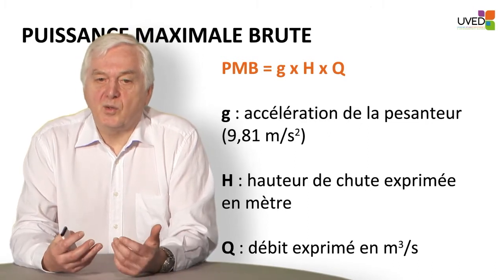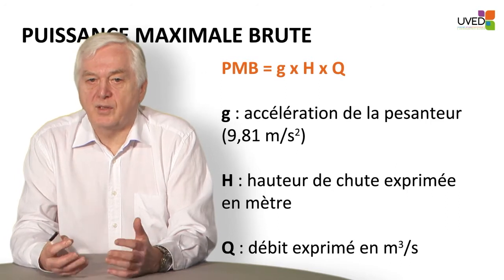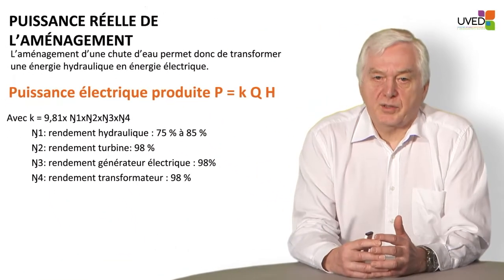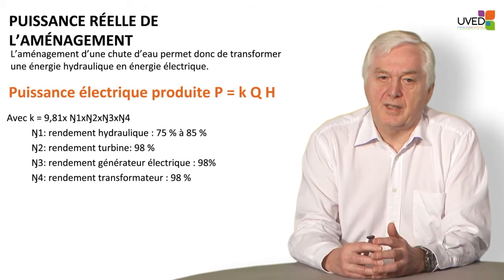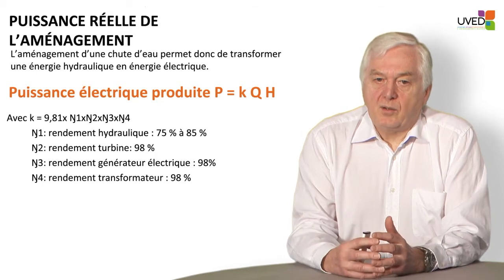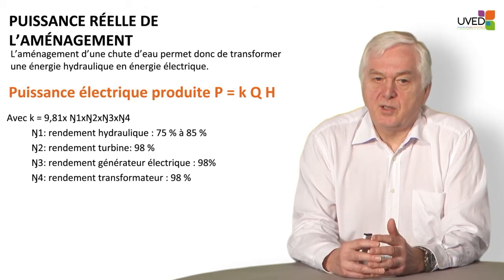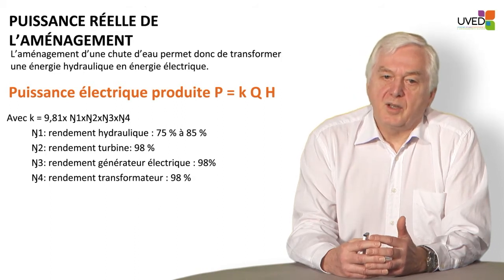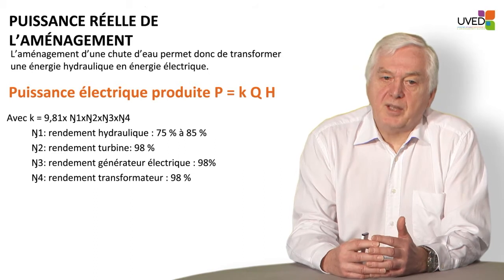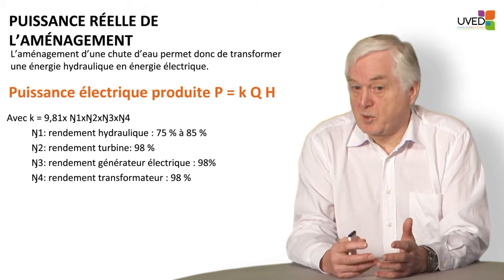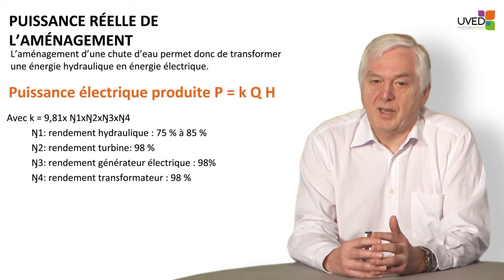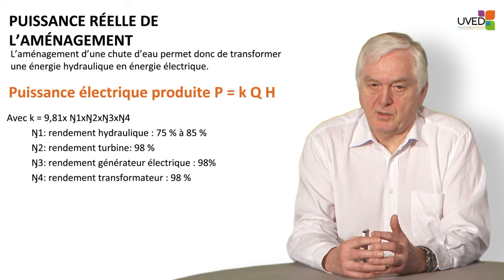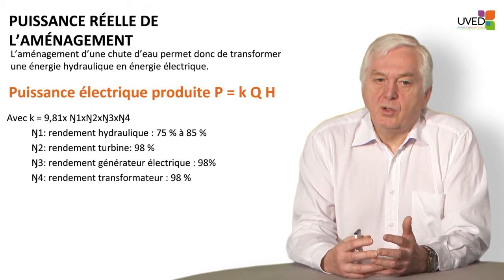Next, we have to make a technical-economic calculation. Intuitively, big flows require bigger investments than small flows. To calculate the real power of the plant, we convert the gross power into electrical power. We feed it through tubes into the turbine, and the passage through the pipelines is where the losses are maximum. Hydraulic yield will be between 75% and 85%. The losses are due to friction between the water and the pipes, and also losses when the water goes through the particular shape of the pipe.